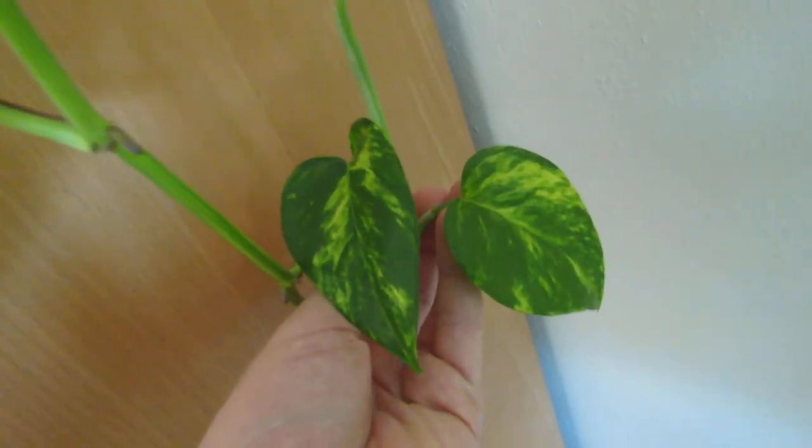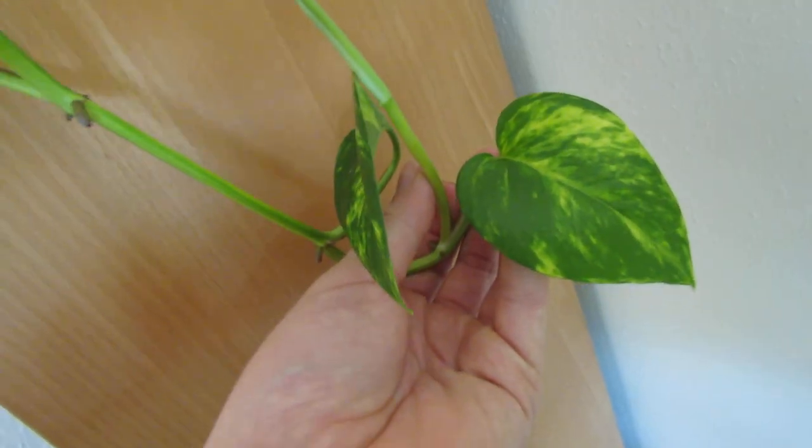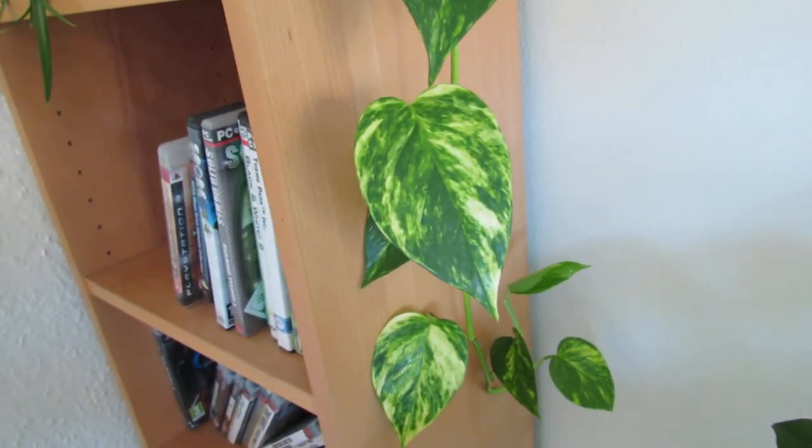Now we're coming into autumn, there's still some variegation but not as much. And what I'll expect is it'll go pure green again towards January, February time.